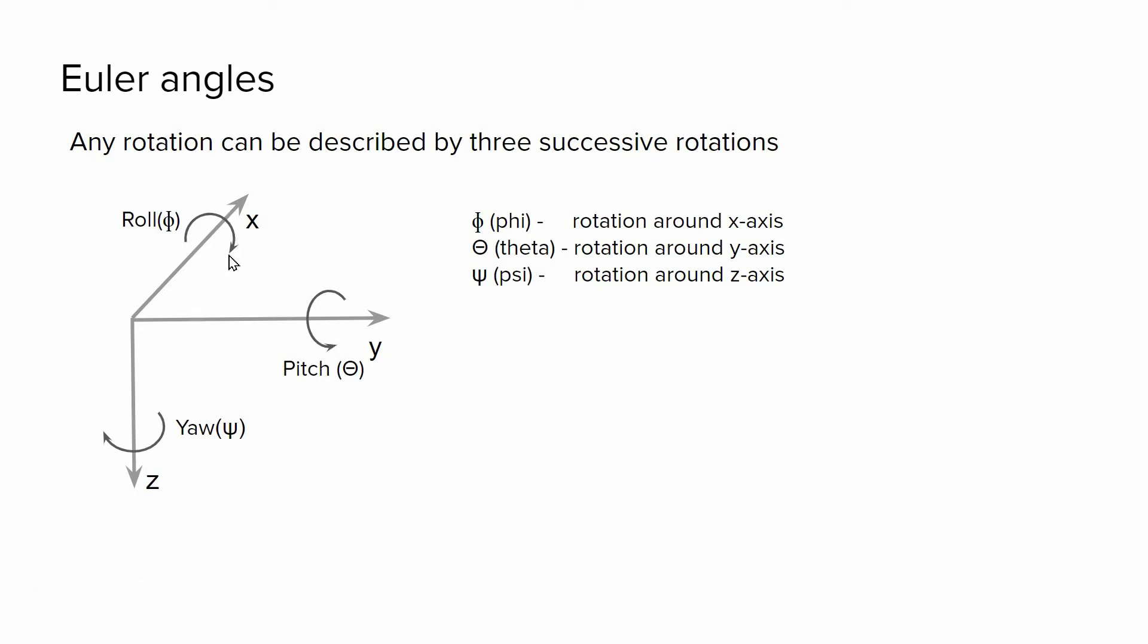And the final rotation around X axis, we call it roll. It means that using Euler angles, we can narrow down the attitude estimation problem into estimating these three angles.